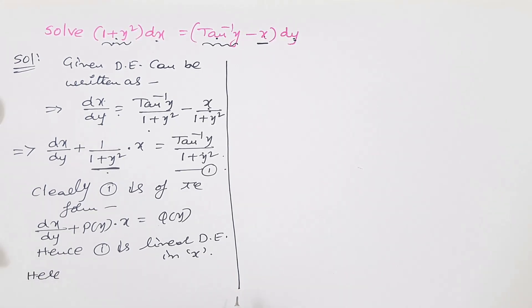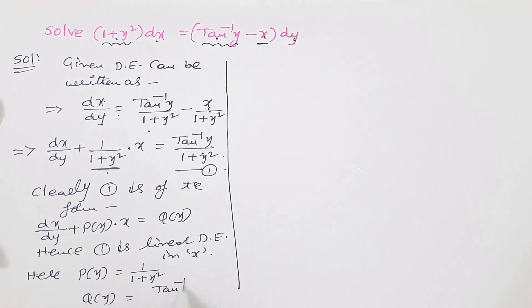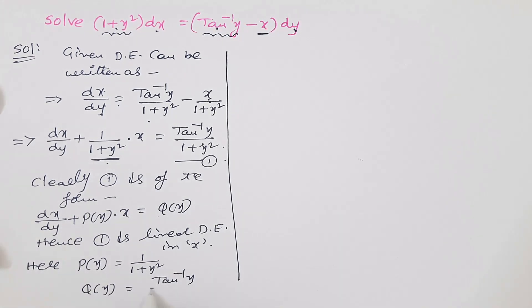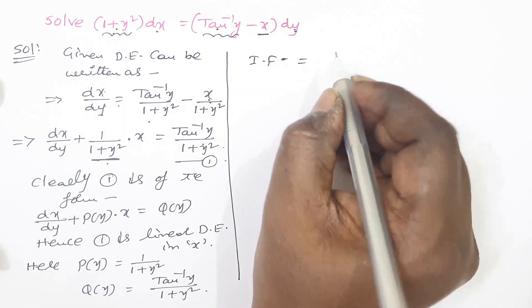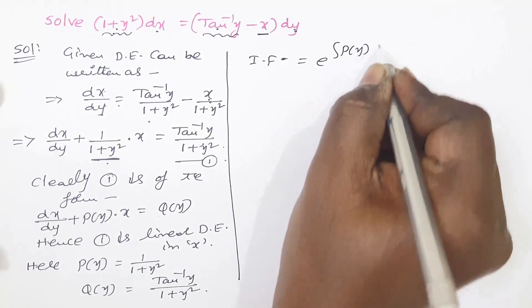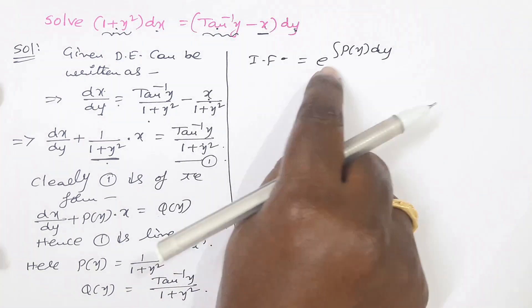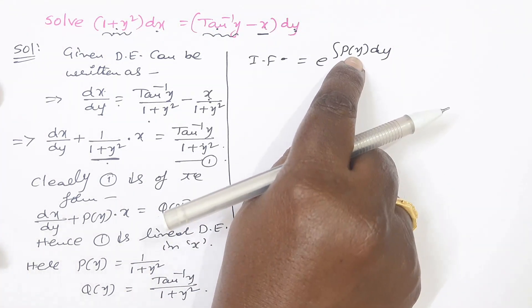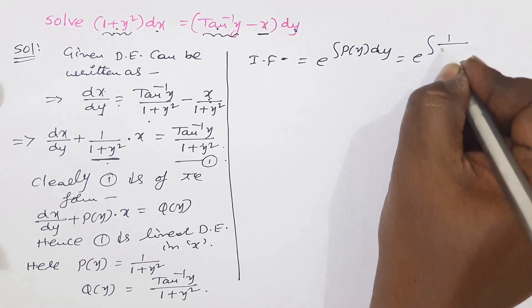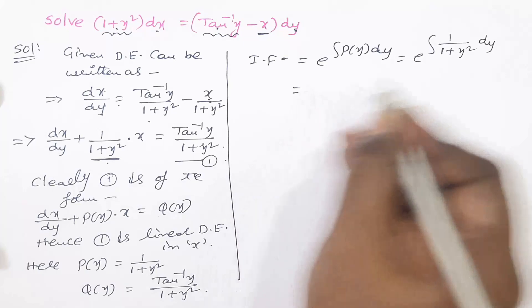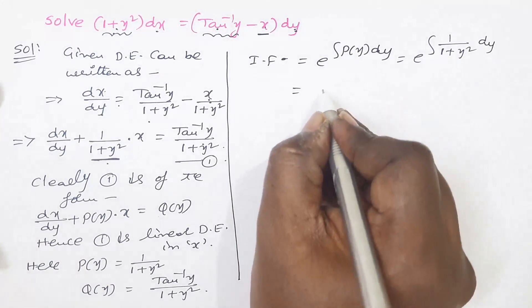You should note what P(y) and Q(y) are. P(y) equals 1 divided by (1 plus y squared), and Q(y) is the right-side term: tan(y) divided by (1 plus y squared). Now we find the integrating factor, which is e to the power of the integral of P(y) dy. That equals e to the power of the integral of 1/(1 + y²) dy, which gives e to the power of tan⁻¹(y), using the formula that the integral of 1/(1+y²) is tan⁻¹(y).